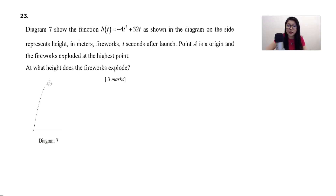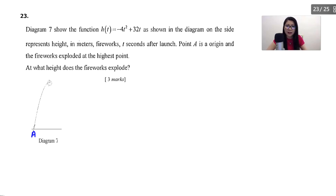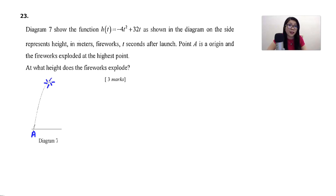Let's look at question number 23. This chapter is differentiation. Diagram 7 shows the function H(T) = −4T² + 32T, representing height in meters of fireworks T seconds after launch. Point A is the origin. The fireworks explode at the highest point. Part A asks: at what height does the fireworks explode? This means we need to find the maximum height, so we set dH/dT = 0.